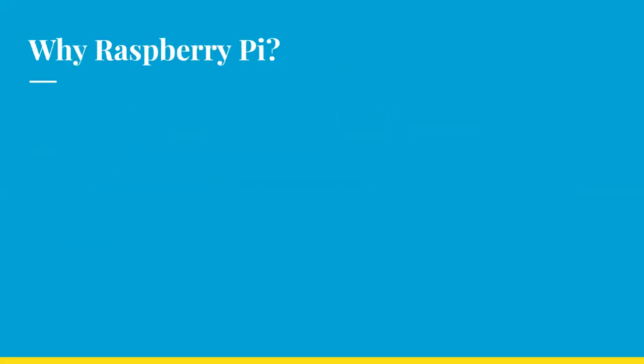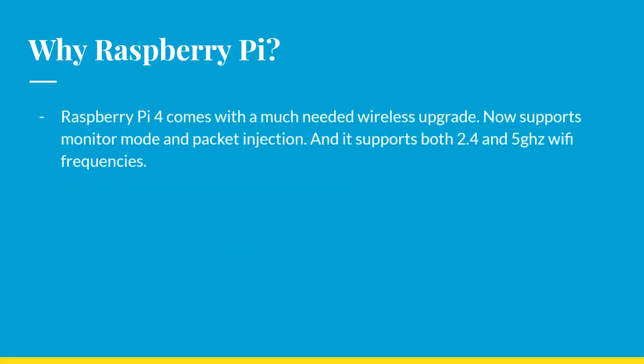So why a Raspberry Pi? The Raspberry Pi 4 comes with a very helpful wireless upgrade — it supports monitor mode and packet injection, and it supports 2.4 and 5 GHz Wi-Fi frequencies. The Raspberry Pi 3 didn't have this, so long live Raspberry Pi 4.